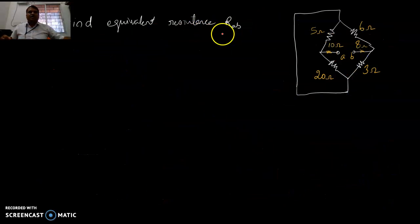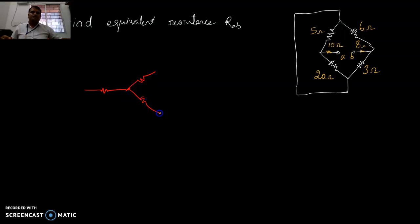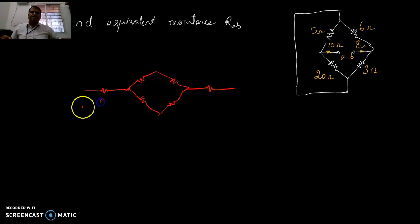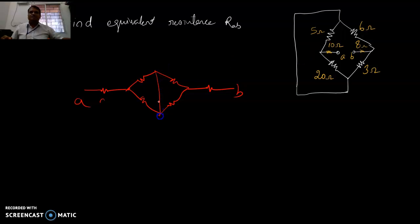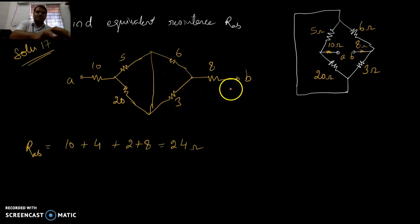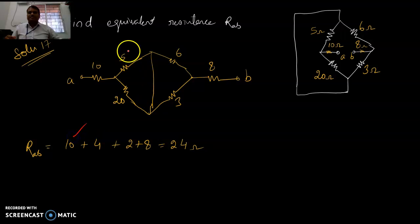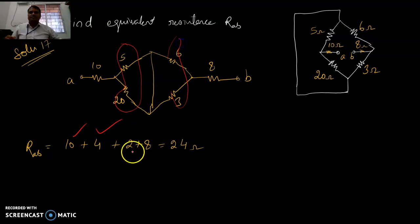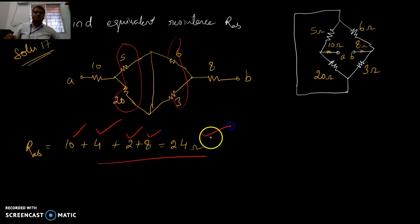Another problem: find R equivalent AB. This is not very complex — just spread out the network. Once spread, this node is short-circuited, so these two are in parallel, these two are in parallel, and the third element is in series. From N to B: 4, 6, and 3 in parallel give 2, and 8 in series with everything gives a final answer of 24 ohms.